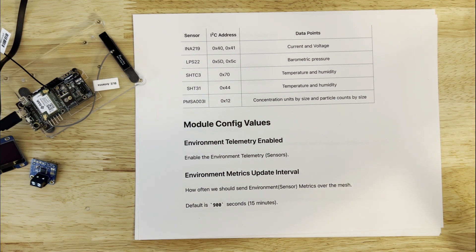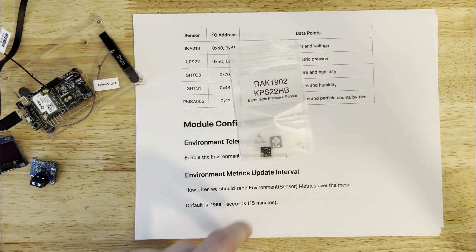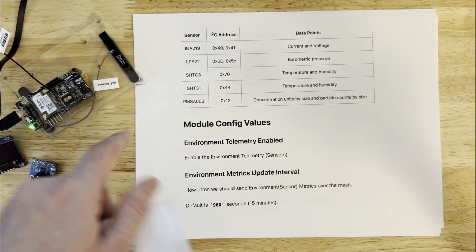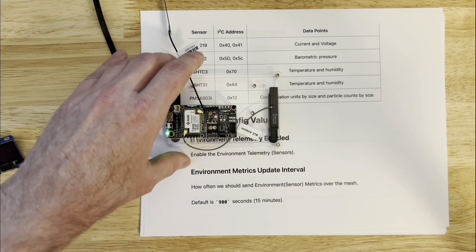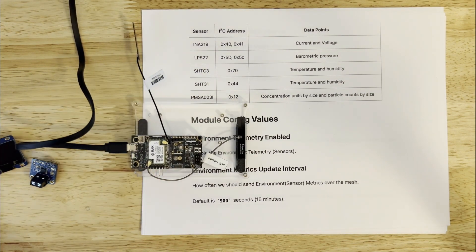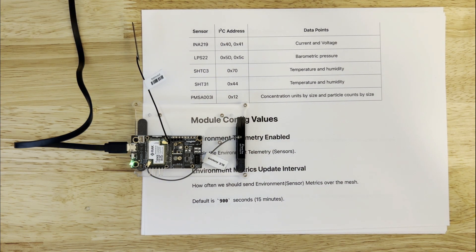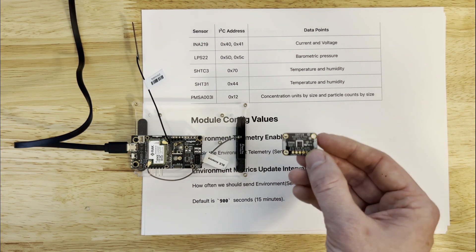There's also from RAK this LPS 22, which is more of a niche sensor — just barometric pressure. With the RAK WisBlock system, you just snap this onto one of the 20-pin ports right here and it's auto-detected. There's also some stuff from the SHT series, and those are mostly temperature and humidity level.